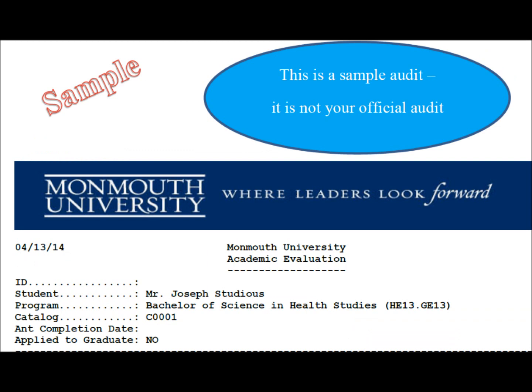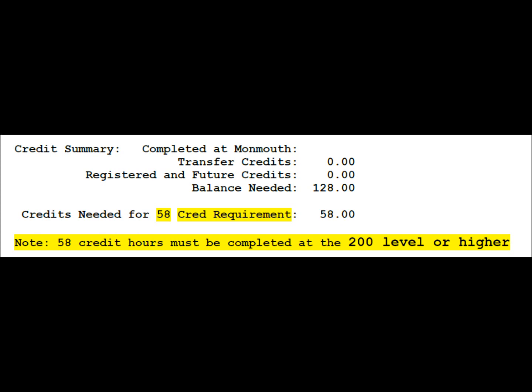Next, you want to thoroughly review and understand your academic audit. Here, I've used a sample audit that I created to assist health studies majors. Add up all four categories: Completed at Monmouth, Transfer Credits, Registered in Future, and Balance Needed. Does that number equal 128?